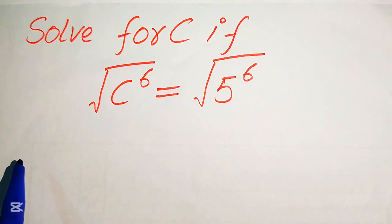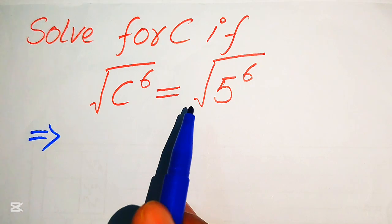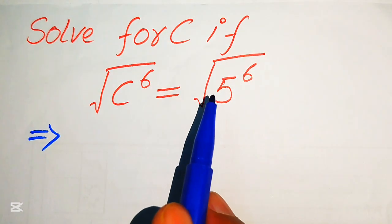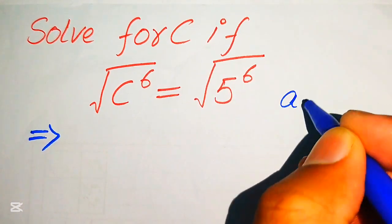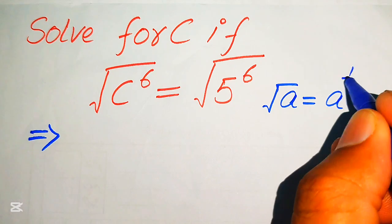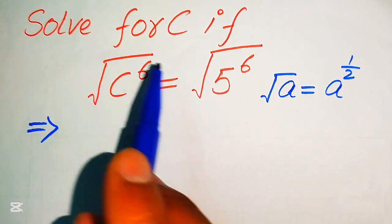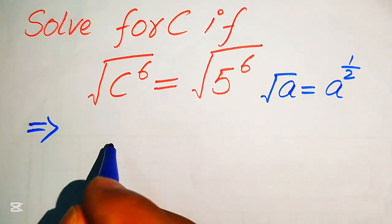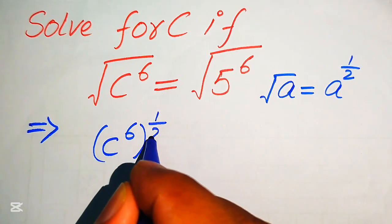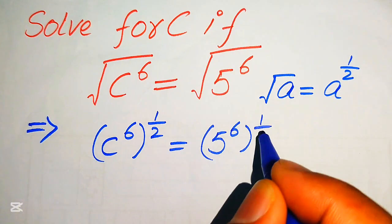The very first step is to write this radical equation into exponential form. We write both radical terms in exponential form. You know that if you have the square root of a, we write this as a to the power of 1 over 2. Similarly, we write these two square roots in the form of 1 over 2, giving us c to the power of 6, whole power 1 over 2, equals 5 to the power of 6, whole power 1 over 2.